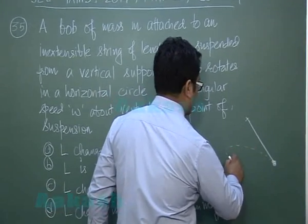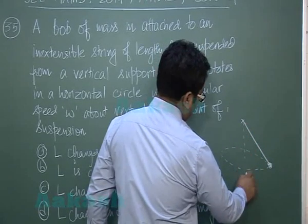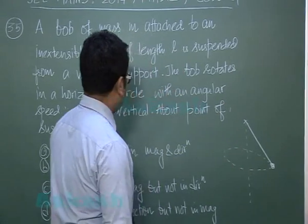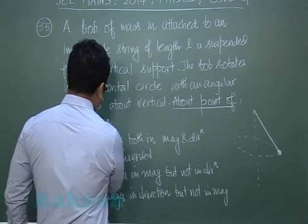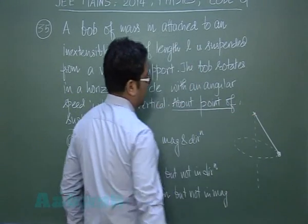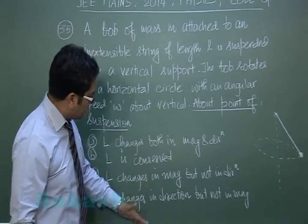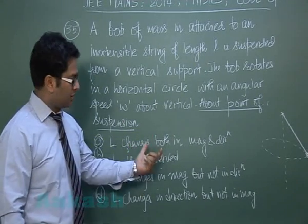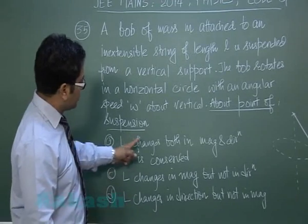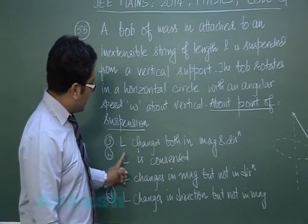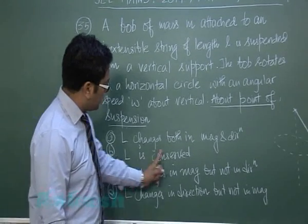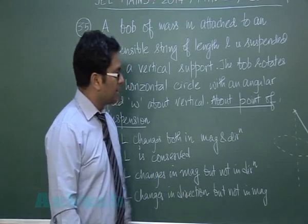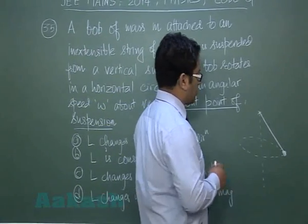This conical pendulum is rotating with angular velocity omega about the vertical axis, and everything has to be discussed about the point of suspension. The question asks about conservation of angular momentum — whether it changes in magnitude, direction, or both. The options are: L changes both in magnitude and direction, angular momentum is conserved, L changes only in magnitude but not direction, or changes only in direction but not in magnitude.